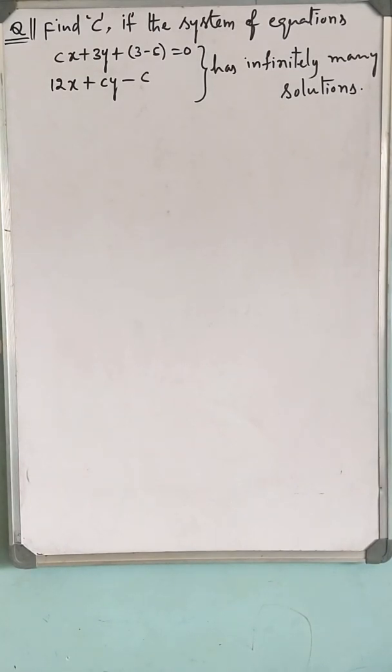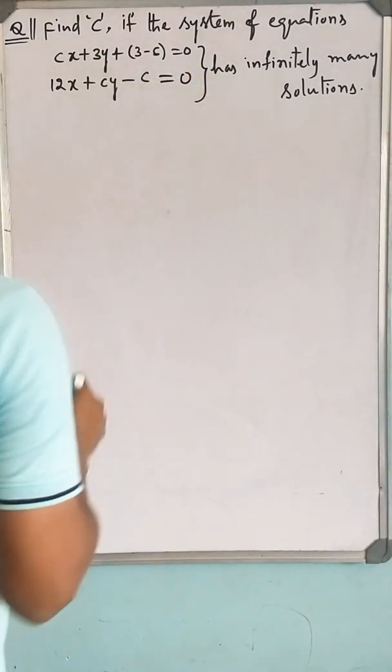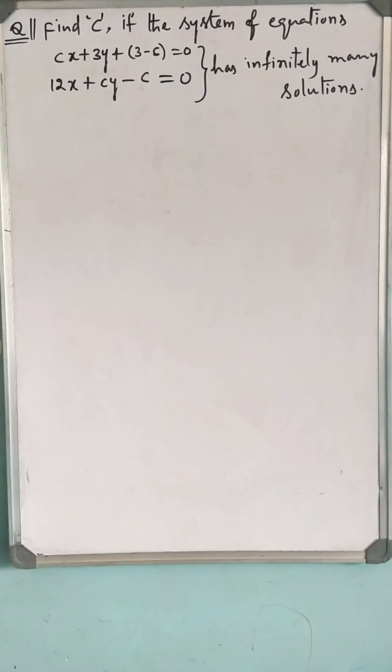The question I have taken is, find C, if the system of equations Cx plus 3y plus 3 minus C equals 0, 12x plus Cy minus C equals 0, has infinitely many solutions.